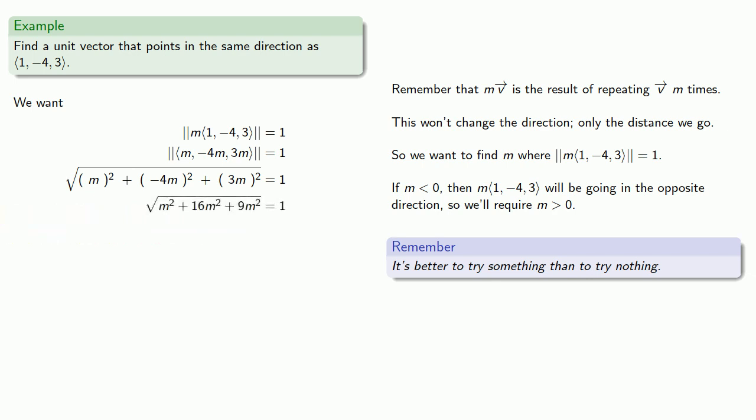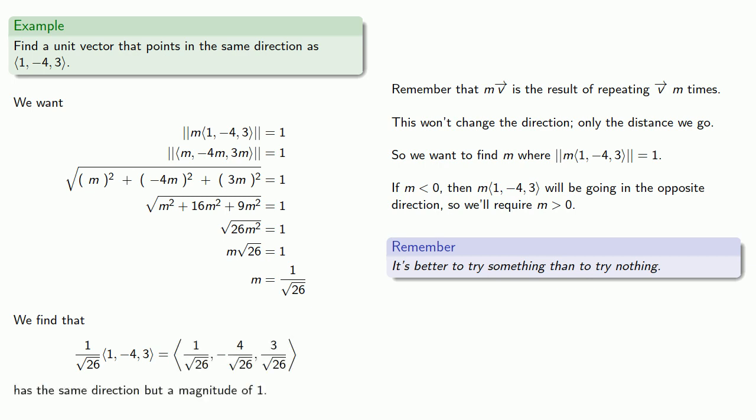We can do a little more than that. Now, remember that we are assuming that m is greater than 0, so this m squared can be removed outside of the square root, and we can solve for m. And so that tells us that 1 over square root 26 times the vector will be a vector going in the same direction that has magnitude 1. So our vector will be...